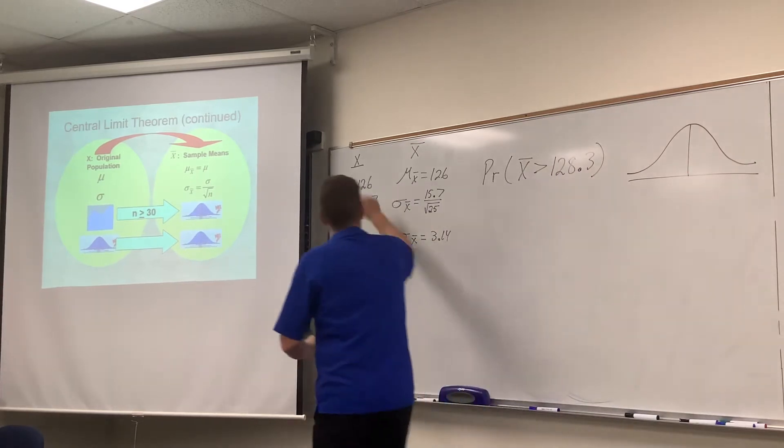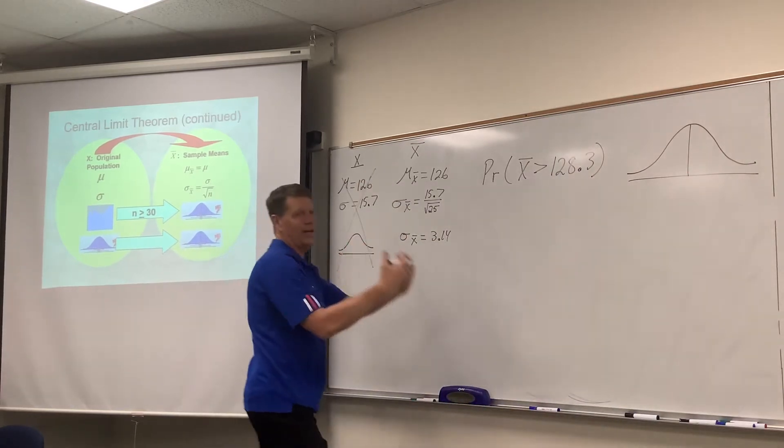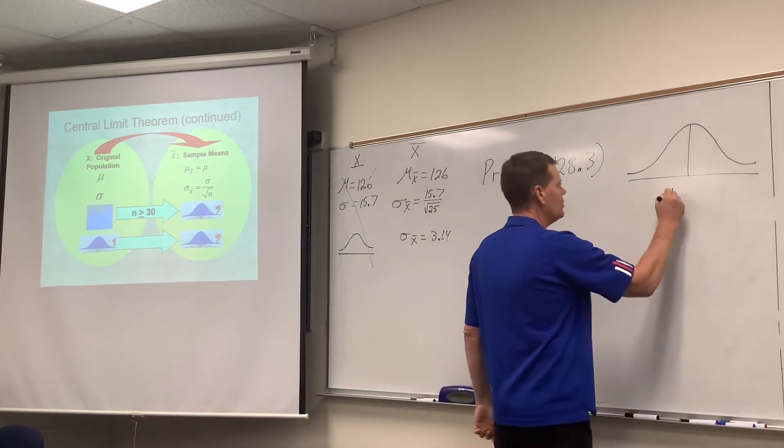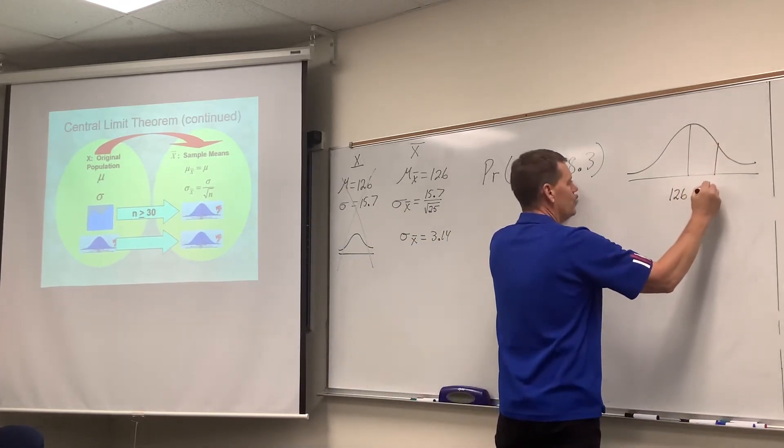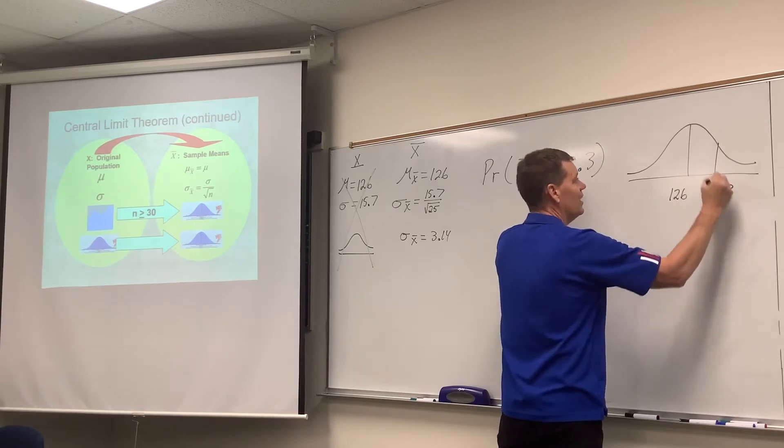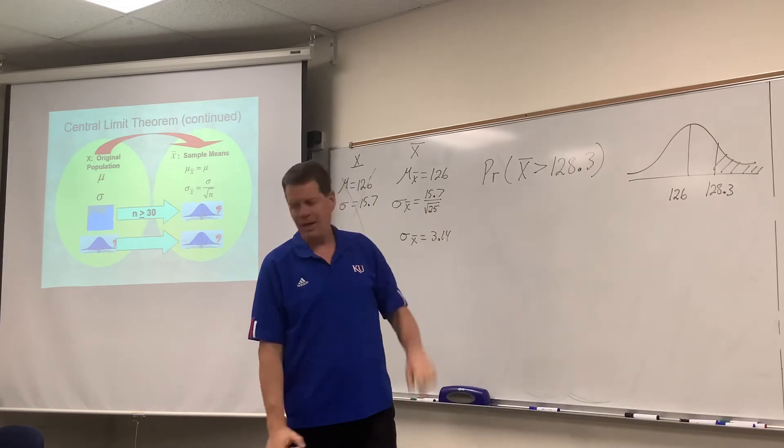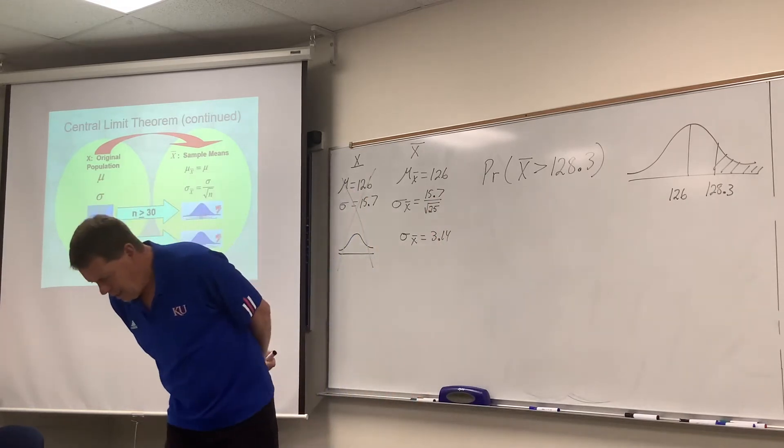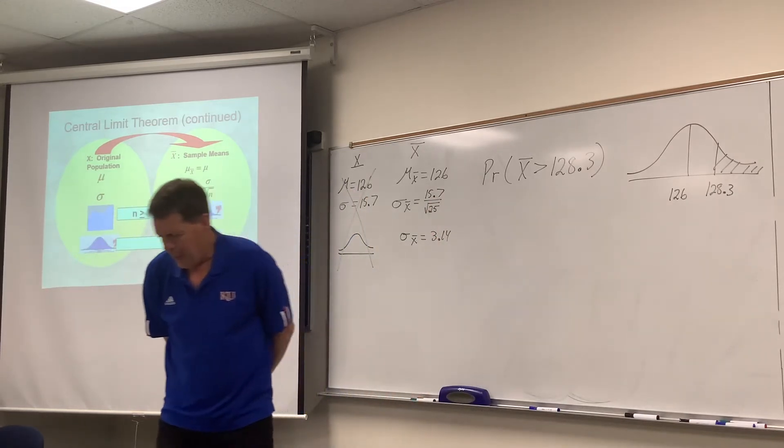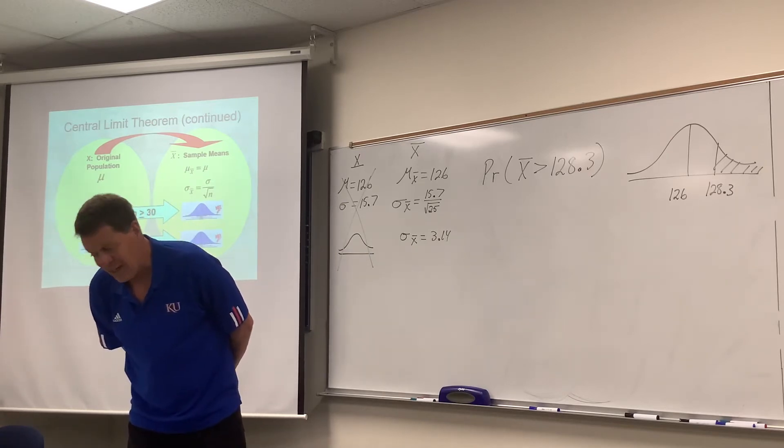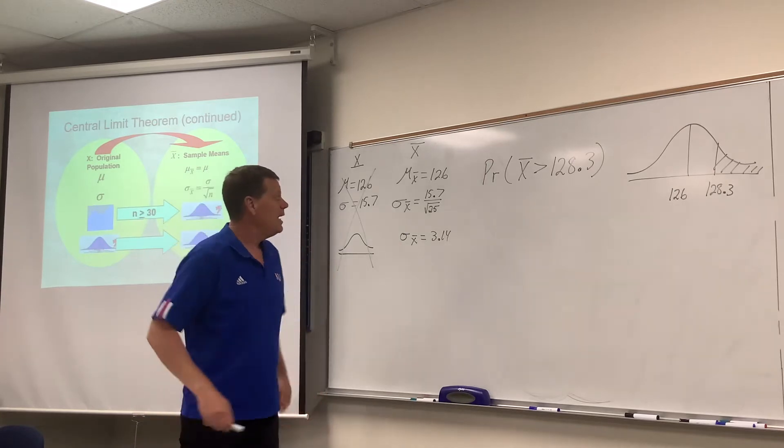And now, it's like, goodbye X. I ran off with X bar. I jumped over to X bar. So the mean of this new variable is 126, and we're talking about 128.3. It said greater than, right? So y'all by now are like, that looks like an upper tail picture there. This would be the point in time where we would standardize this.